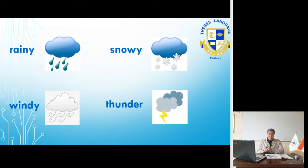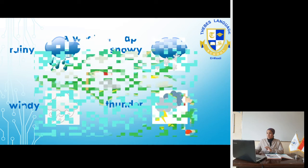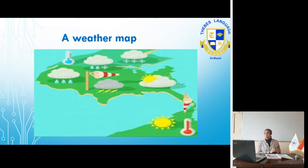The next symbol is thunder, and the last one is cloudy. This is a weather map — these symbols allow us to read the weather in each of the cities or different places shown on the map.